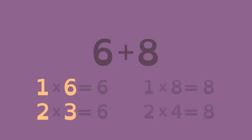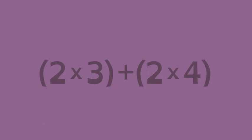Similarly, the factors of eight are one, eight, two, and four. Two is the greatest common factor of six and eight, so you can write the expression like this.